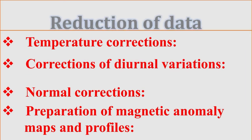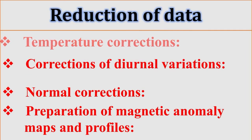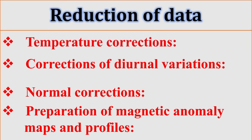The next topic is reduction of data. When we have taken all the readings, some reduction of data is required. The magnetometer readings obtained in the field are converted into magnetic intensities, generally in gammas, by using the scale constant. Thereafter, magnetic intensity values are corrected for temperature, diurnal changes, and normal corrections.